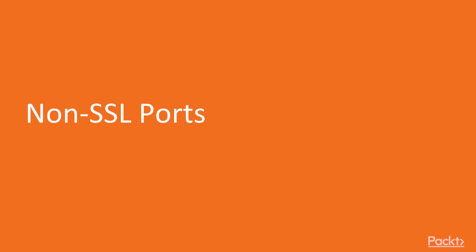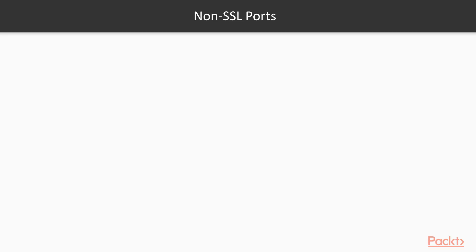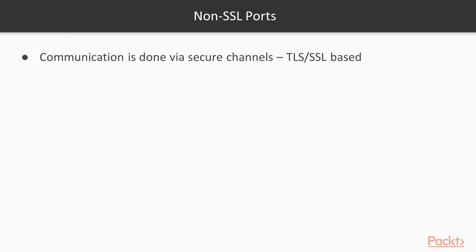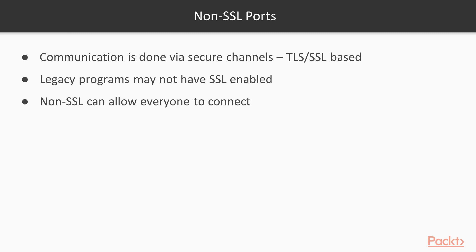In the first video, we are going to take a look at how we can enable the non-SSL ports. Although it is counter-intuitive from a security standpoint, you might need the non-secure port where the communication does not require a TLS or SSL-based certificate — for example, legacy or older programs where the library used does not have SSL support enabled. The non-SSL channels can allow anyone to connect to the server and communicate without requiring a valid certificate.